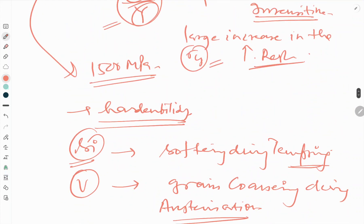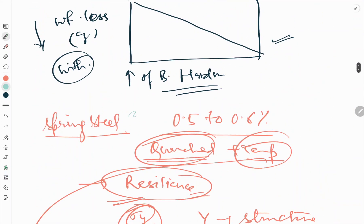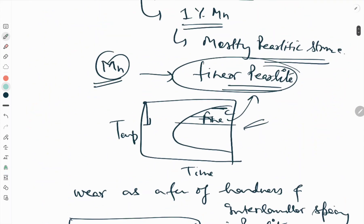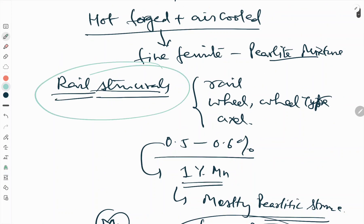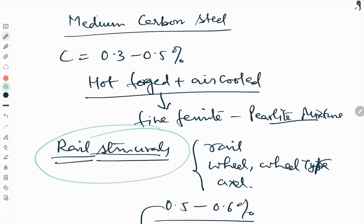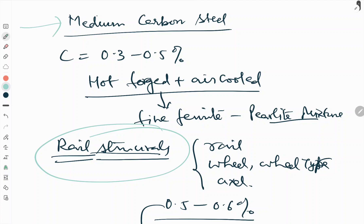This is all about today's video, spring steel and rail structures. This is basically the type of medium carbon steel. Please stay connected and like, share, subscribe to our YouTube channel. Thank you.